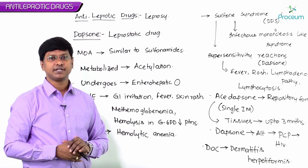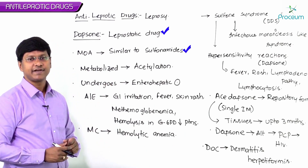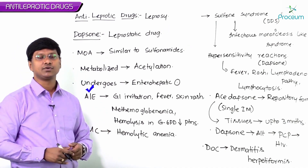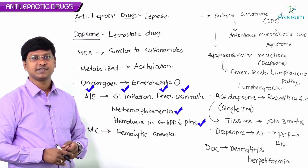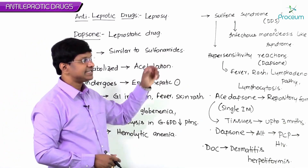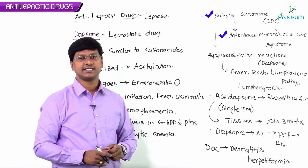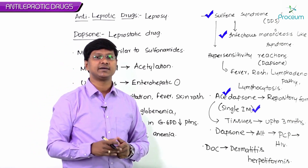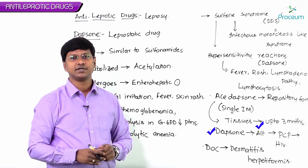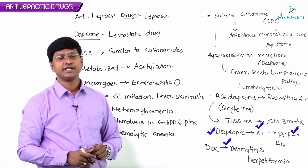To summarize: dapsone is a leprostatic drug related to sulfonamides with a similar mechanism of action. It is metabolized by acetylation and undergoes enterohepatic circulation. Adverse effects include gastrointestinal irritation, fever, skin rash, methemoglobinemia, and hemolysis in G6PD deficient patients — the most common being hemolytic anemia. It can cause sulfone syndrome (infectious mononucleosis-like syndrome). Acedapsone is the repository form given as a single IM injection maintaining inhibitory levels for up to three months. Dapsone is an alternative drug for Pneumocystis jiroveci infection in HIV patients and the drug of choice for dermatitis herpetiformis.